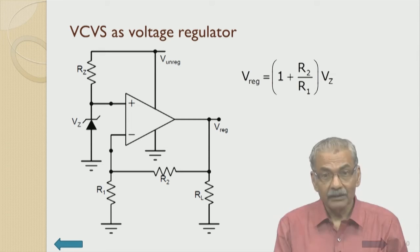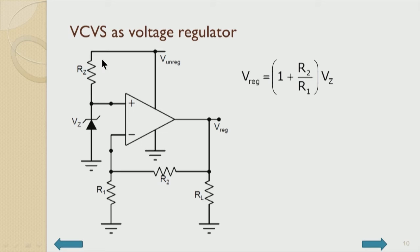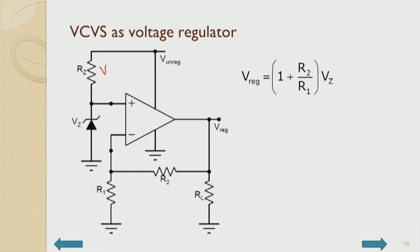Now let us consider the actual design of this voltage regulator as a VCVS (voltage-controlled voltage source). We have a reference — later we will see this is available as an IC. The voltage reference need not necessarily be a Zener; it can be a circuit that simulates a Zener voltage with zero temperature coefficient.